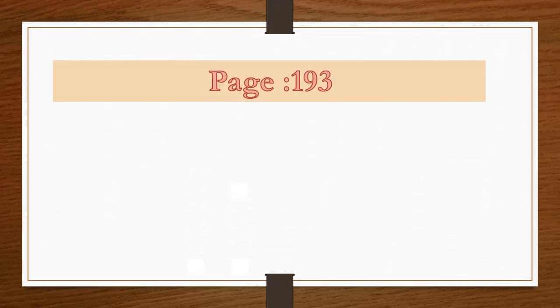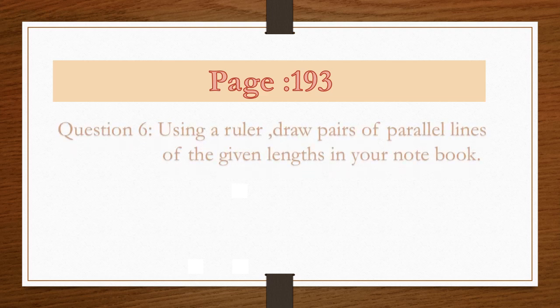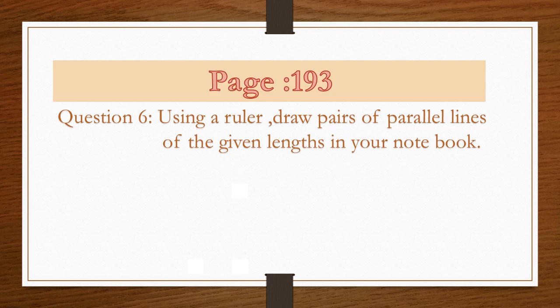Now students, open the page number 193 of your countdown book and look at that question number 6. Question number 6 is using a ruler, draw pairs of parallel lines of the given length in your notebook. I will do the part A of question number 6 for you.